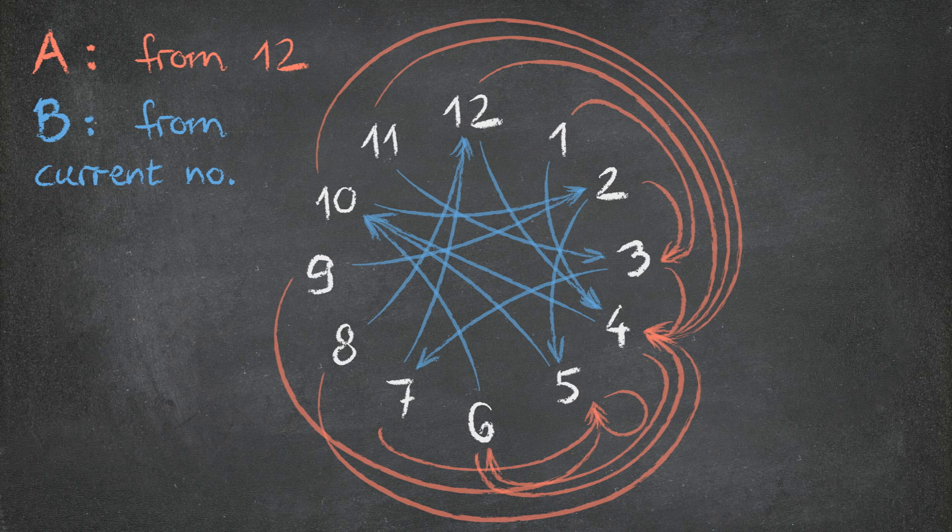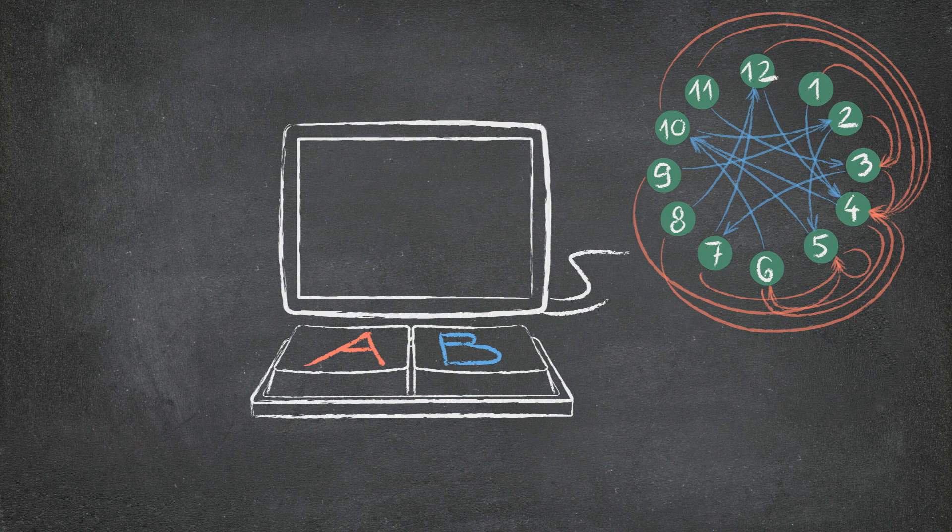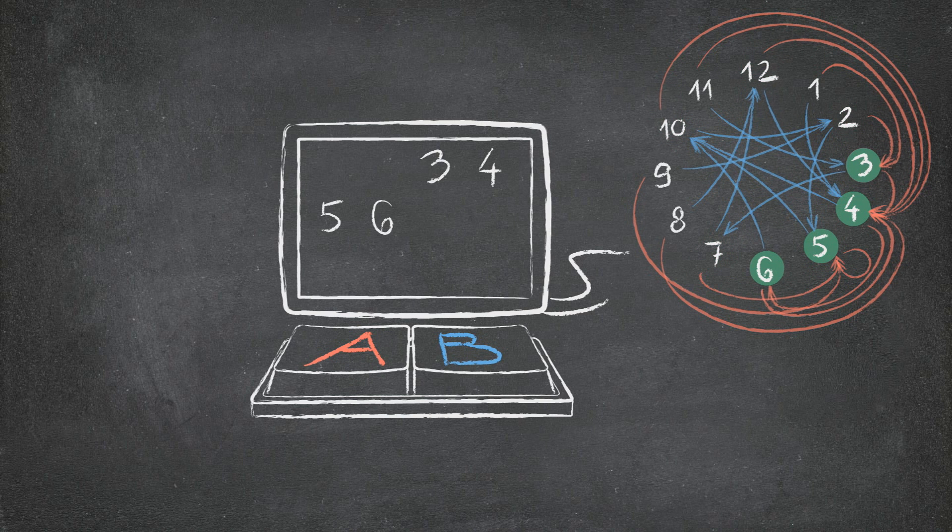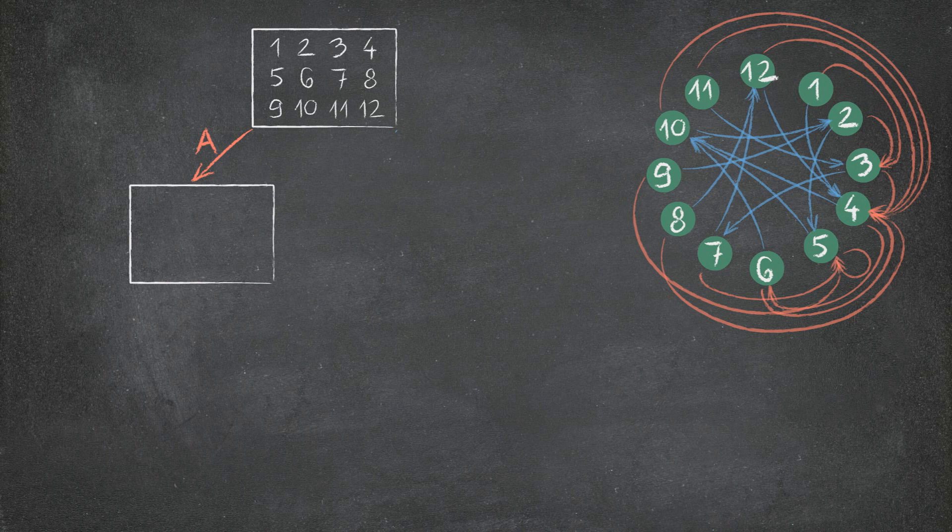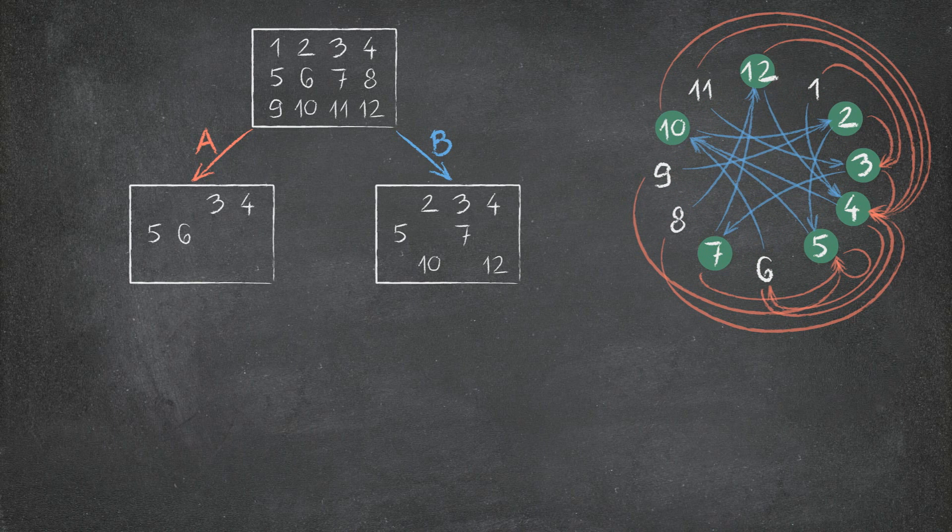Instead of one person choosing a random number, imagine that we have 12 different people choosing the 12 different numbers in the beginning. Let us try and track in a clever way where different sequences of instructions take this group of people. Remember, we want all of them to end up in the same place. Well, in the beginning, we either tell them to do A or B. Performing A sends them to 3, 4, 5 and 6. Performing B sends them to, well, these numbers. These are the possibilities after step 1.